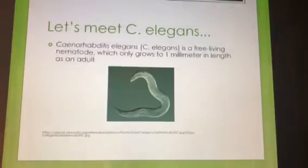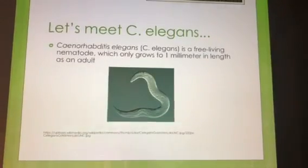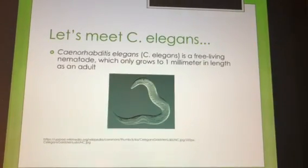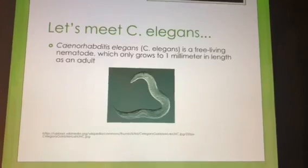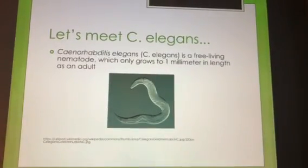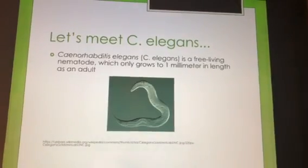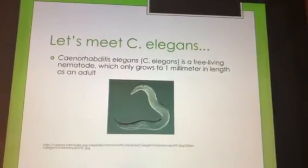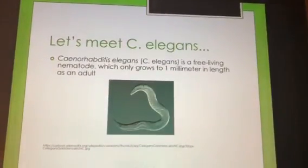So let's meet C. elegans. C. elegans is a free-living, tiny little nematode. It only grows up to one millimeter in length as an adult. And C. elegans is incredibly important to the field of biology because it is transparent and therefore makes it very effective for eukaryotic genetic studies in the field.